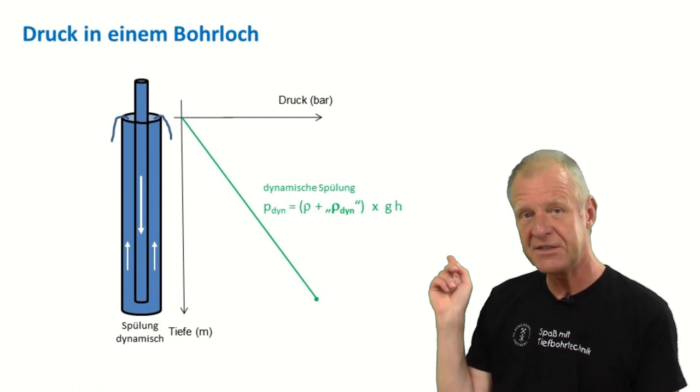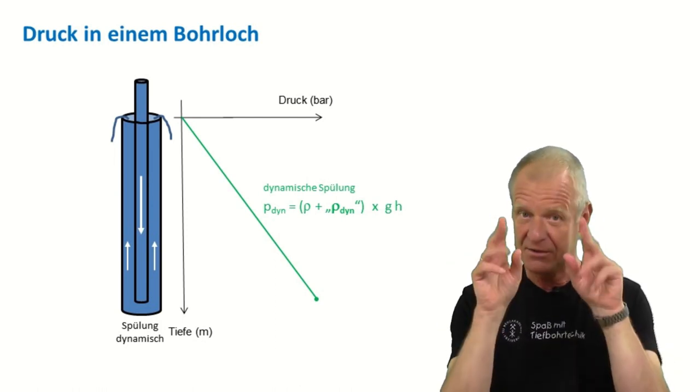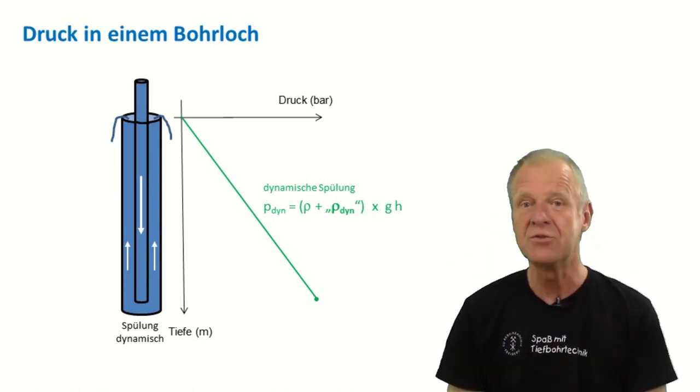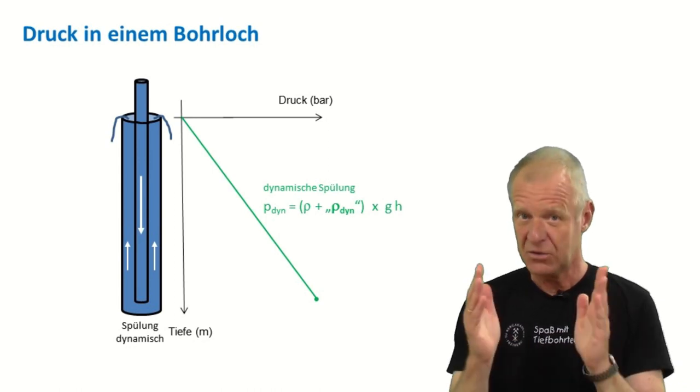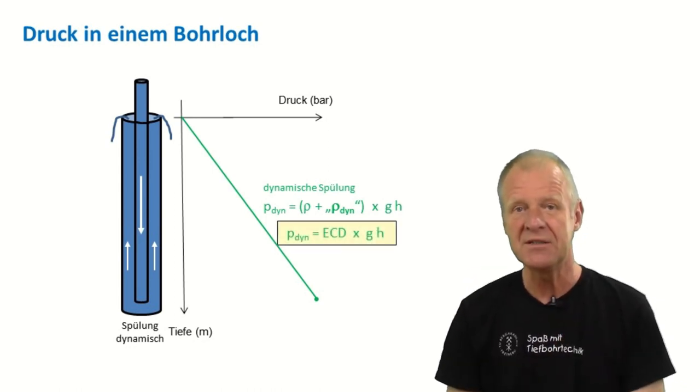We now have two rho values, a static rho and an imaginary dynamic rho. And together, they can form a term called ECD.